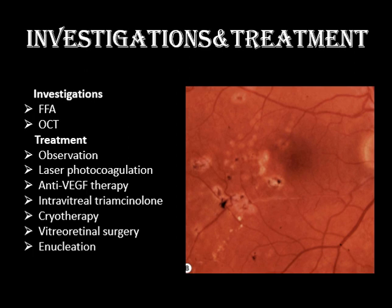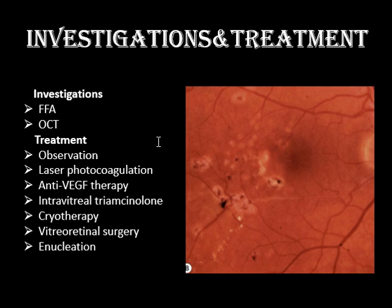For investigations and treatment of Coats disease: we do fundus examination and OCT. We want to see the leakage and assess macular status with OCT. We also assess the retinal periphery and vascular status. To see the aneurysmal dilatations, telangiectasias, and leakage status, we perform FFA (fundus fluorescein angiography). OCT is specifically used to evaluate the macula.